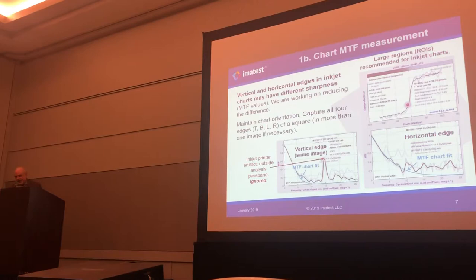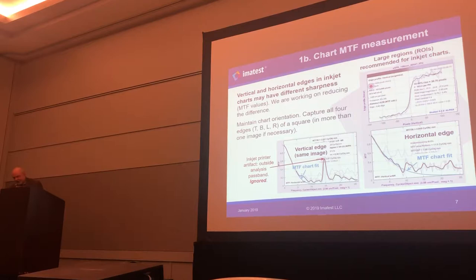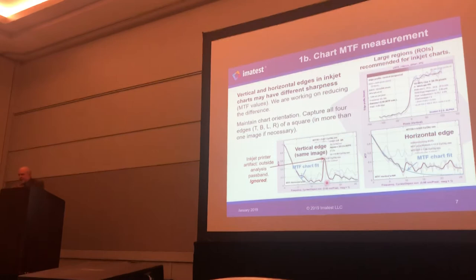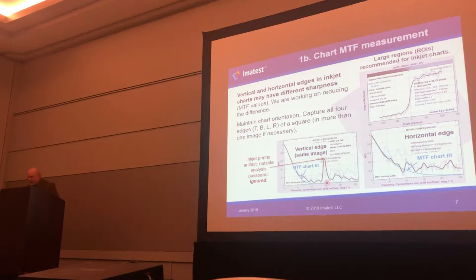Then we measure the chart MTF. We found that different edges — vertical and horizontal — tend to have different MTF values. We're working on fixing that. So when we do our measurements, we measure all four orientations on a square: the top, the bottom, the left, and the right. Here's an illustration of how horizontal and vertical edges for this particular printer are different. In particular, the vertical edge has a peak that has to do with the dot pattern laid down by the printer. Fortunately, it's well outside our measurement passband, so it doesn't really have an effect. When we do the model fit, we'll fit to frequencies where we don't have a lot of noise and trouble.